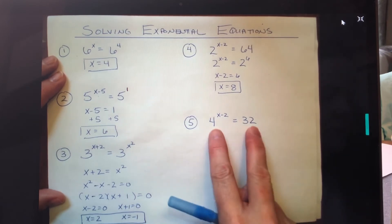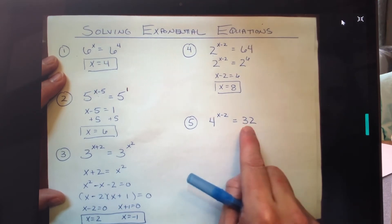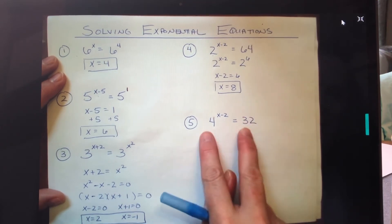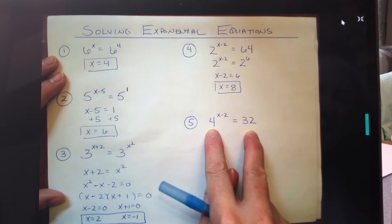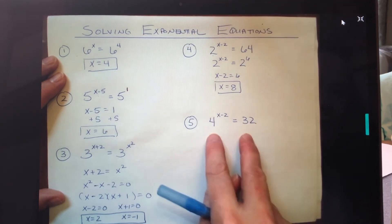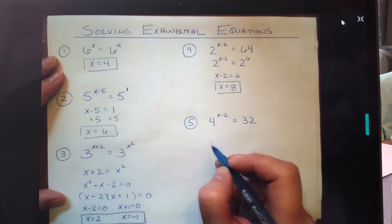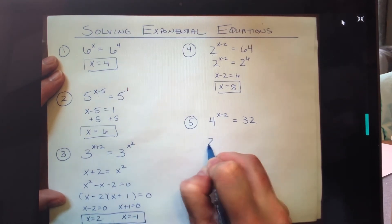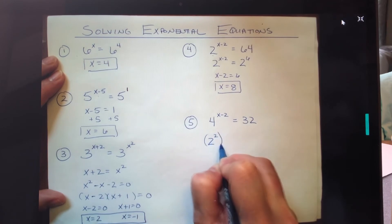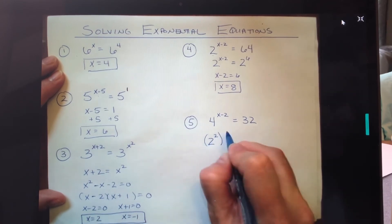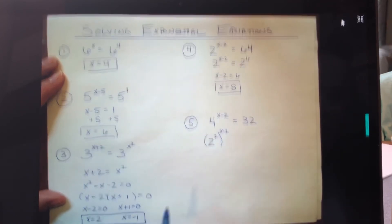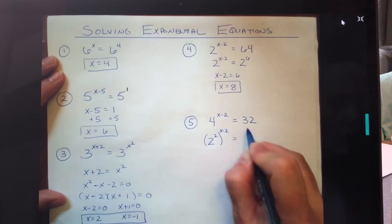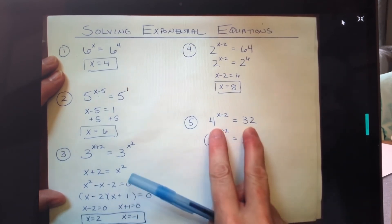But I would say not so fast. If you realize that maybe you can't modify this to be 4 to a power, but could you change both of them to be some number to a power that matches? And if you look at these numbers both quickly, you realize they're actually both powers of two. So I'm going to rewrite that 4 as 2 squared, and I still have my x minus 2 up there. 32 is actually 2 to the fifth. So recognizing these were both powers of two allows me to write it like this, and now this is actually going to be a one-to-one problem.